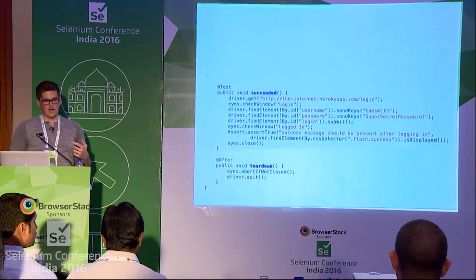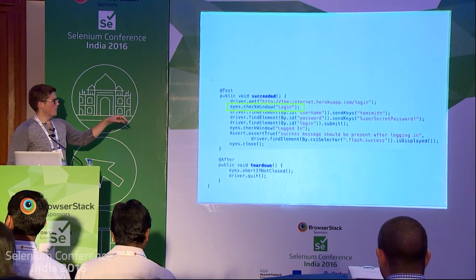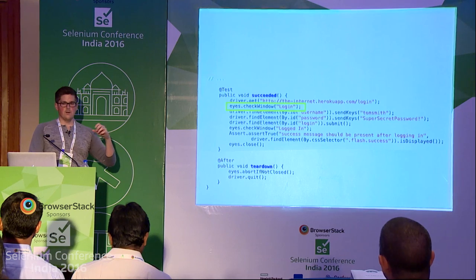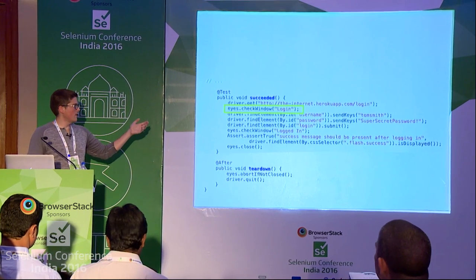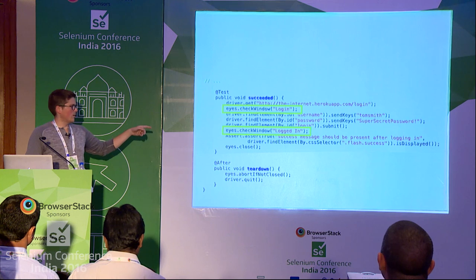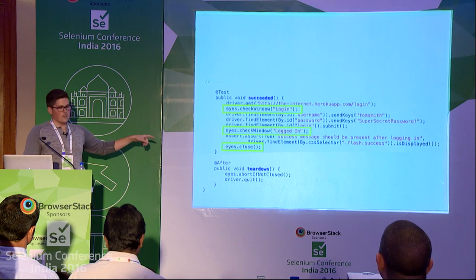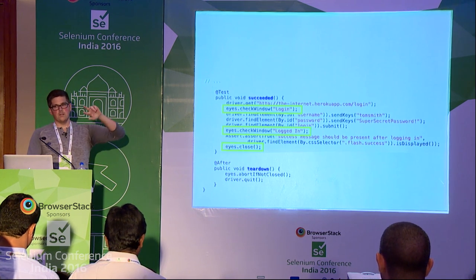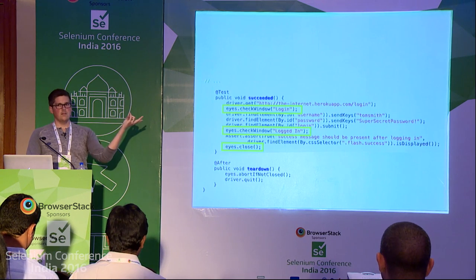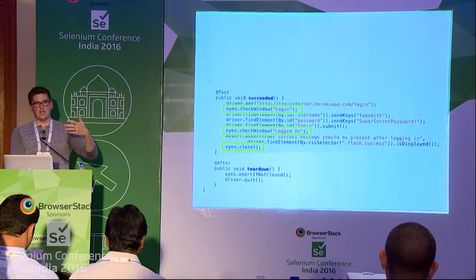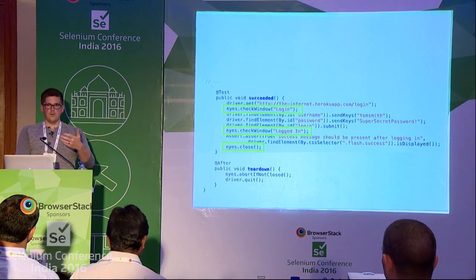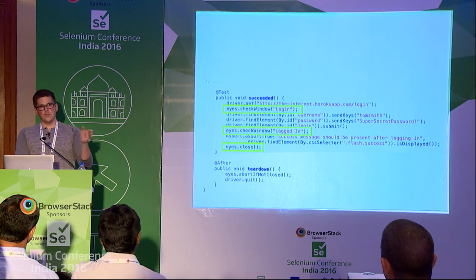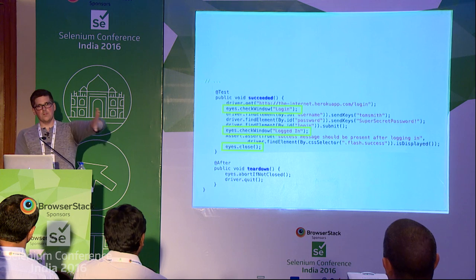Then in the test we add a couple of checkpoints — we call Eyes.checkWindow and pass in helpful metadata about what we're checking: Eyes.checkWindow for the login page, and after submitting we call it again for the logged-in state. At the end of the test we call Eyes.close, which does the comparison against those check windows and compares them to the baseline. To get a baseline image, the first time you run the test it'll say it failed because you need to review the image to approve it. If you run the test again, it automatically makes that the baseline, and any future test run will compare what it sees to what was originally captured.